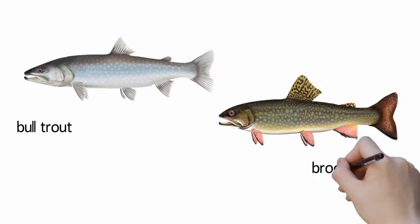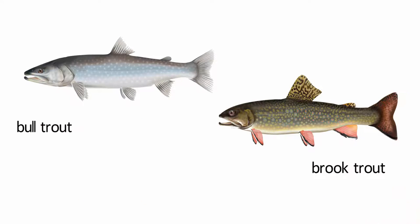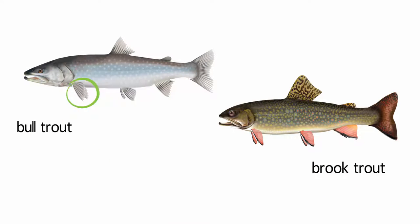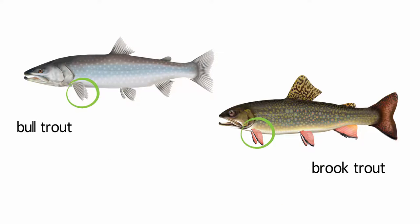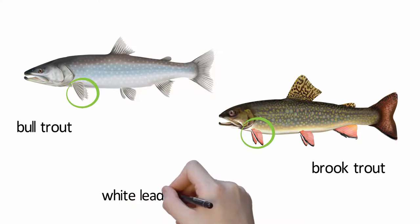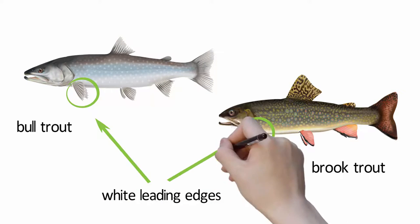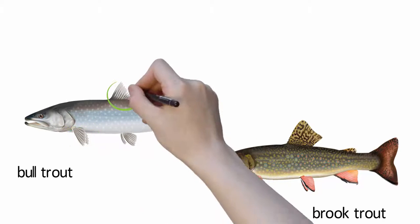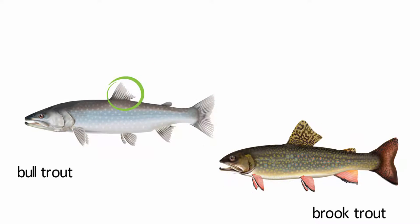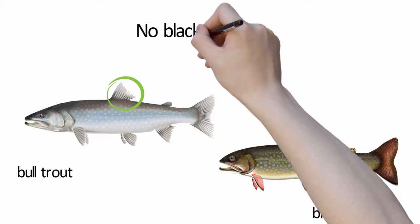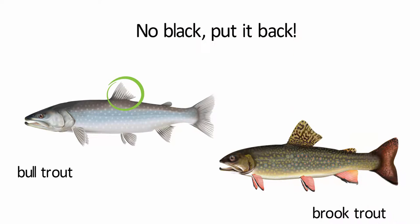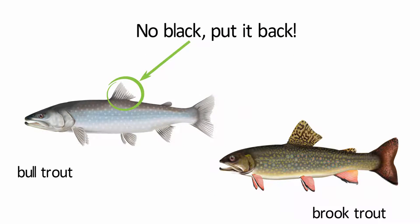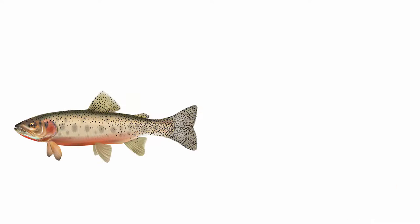Bull trout and brook trout are easily confused. They are both char species, with white leading edges on the pectoral and pelvic fins. Bull trout have white spots on the body and do not have any black markings on the dorsal fin. "No black, put it back" is an easy way to avoid harvesting a bull trout by mistake.